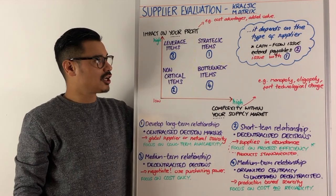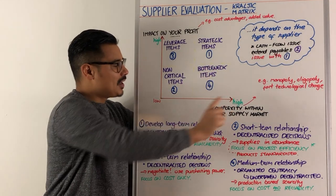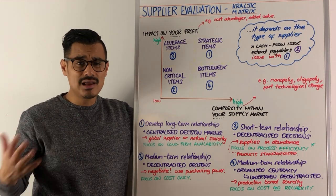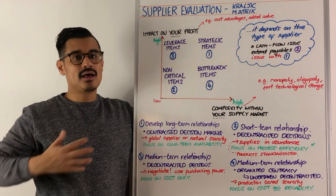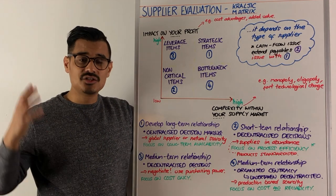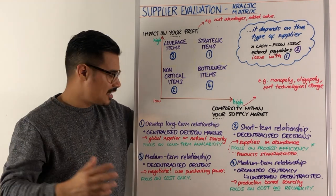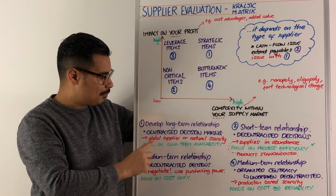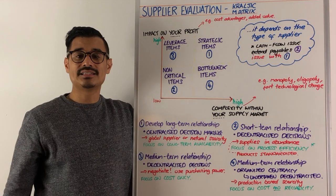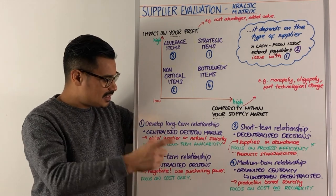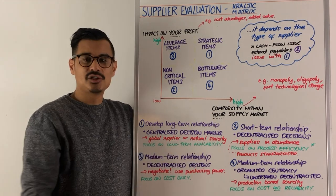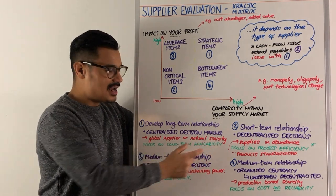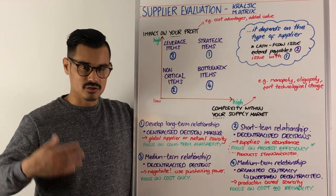The first quadrant is strategic items — a complex market from your perception, and they have a big impact on your profits. These are suppliers you want to keep happy, so you want to develop a long-term relationship. From an HR point of view, you might want to utilise centralised decision-making, because it's likely a global supplier or involves some form of natural scarcity. Focus on the long-term availability of these suppliers — probably raw materials.